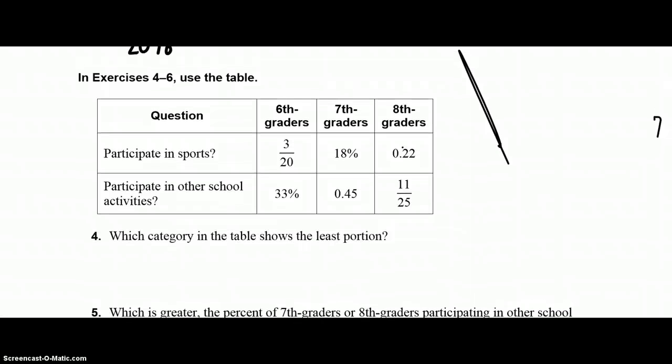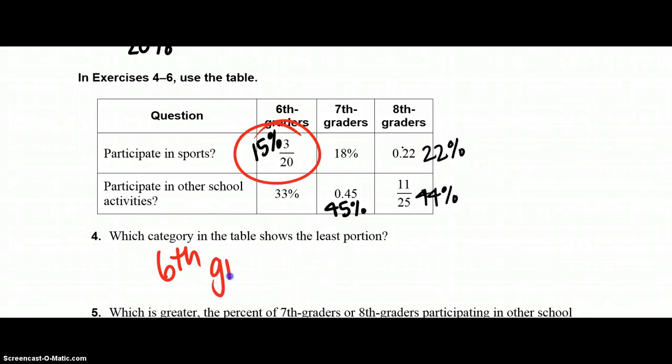Numbers four through six, you have to use this table provided. Before you can use this table, I need you to convert everything to one type. So three over 20 is 15%, that's already a percent, so is that. This is 45%, and 11 over 25 is 44%. 0.22 is 22%. This question says, which category in the table shows the least? So out of 15%, 33, all of these numbers, which one is the least? 15% is the least, so which category? Well, this is the sixth graders who participate in sports.